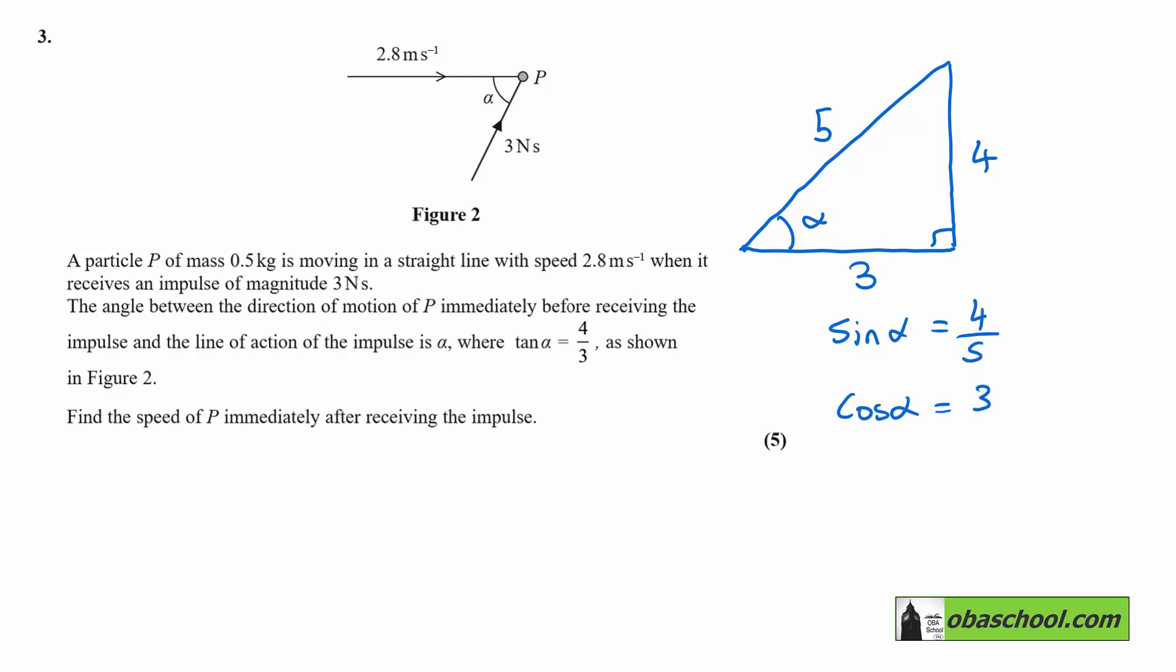If we also consider that after the impulse we have horizontal and vertical components of the velocity that are called V and W, then we can consider the horizontal. We're going to be using impulse is change in momentum. So what is the impulse horizontally?